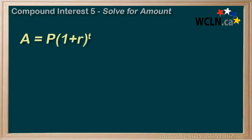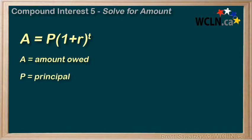It's now time to explore some compound interest questions with our new equation: A equals P times (1 plus r) to the power of t. Here, A equals the amount owed at a particular time, P equals the principal or the original amount borrowed, r is the interest rate, and t is the time involved in this loan.